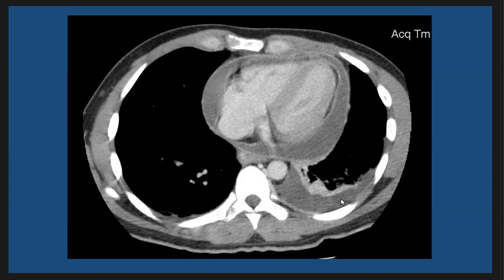We also have left-sided pleural effusion with enhancement of the pleural layers — the visceral and parietal layers. This is a pleural split sign and a pericardial split sign. There is also associated subsegmental atelectasis.